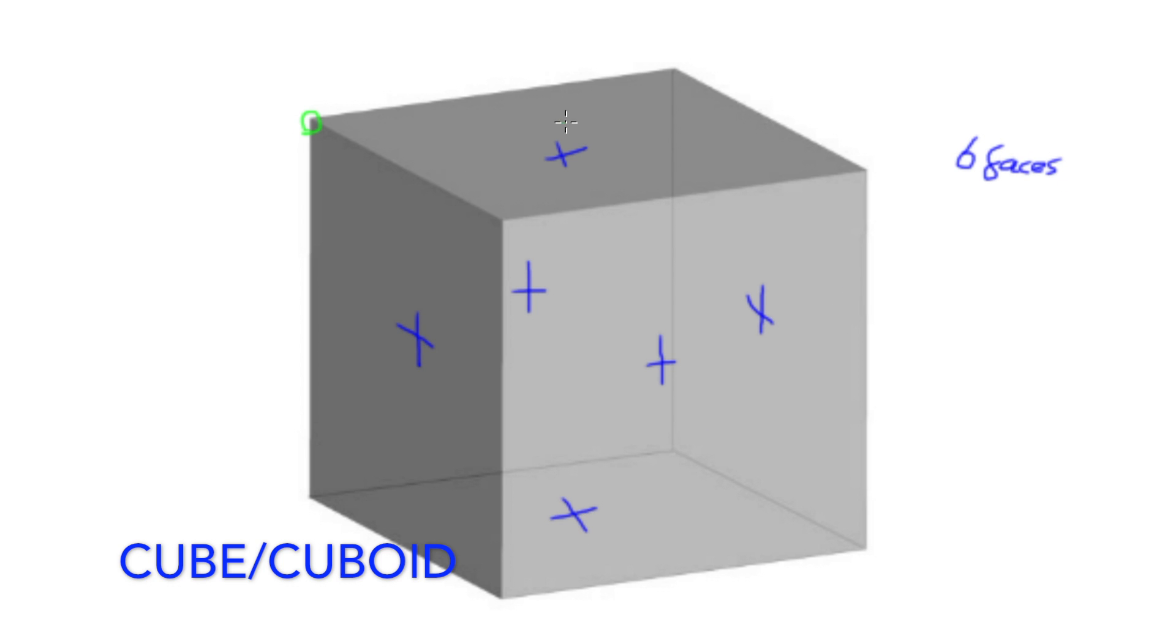We can also count the amount of vertices, that's where the 3 edges of each corner meet. And finally it will have 12 edges, that's the straight lines that connect each of the vertices.